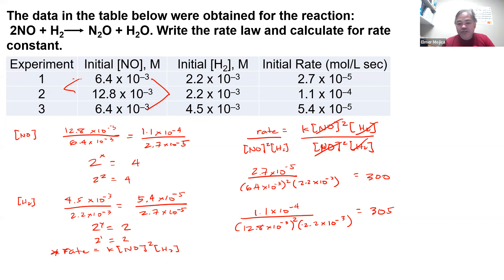And if you're going to look at the values, the last one that you have here, 5.4 times 10 to the negative 5 over 6.4 times 10 to the negative 3 squared times 4.5 times 10 to the negative 3, you're going to get around 293. So as you can see, the value is not the same, but in theory it should be the same, or if not the same it should be close to one another. Now they're close to one another.